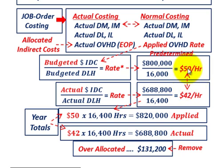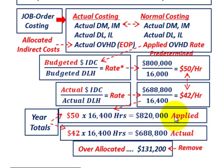We've over-allocated here — the budgeted amount was $50 per hour, which we used in our accounting records, and our actual amount is $42 per hour. To determine the total difference, the total applied is $50 per hour times 16,400 actual hours, which gives us $820,000 of applied overhead. Our actual overhead is $42 times 16,400 hours, equaling $688,800. So we over-applied by $131,200.